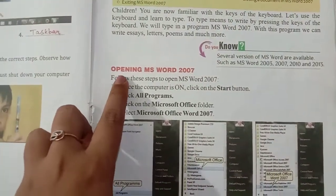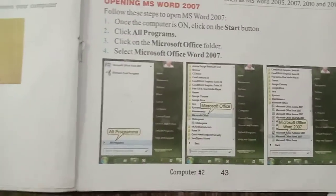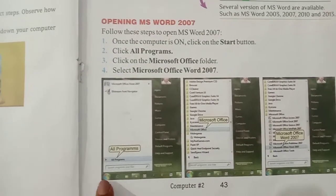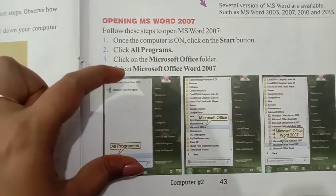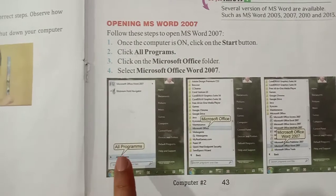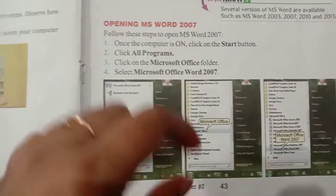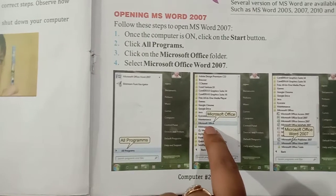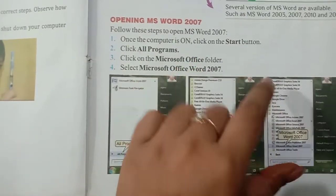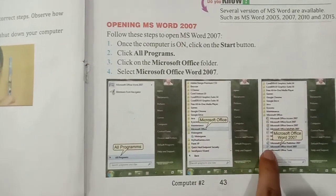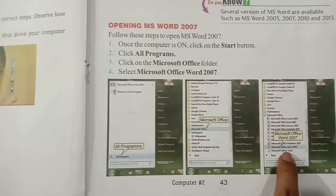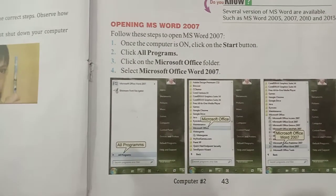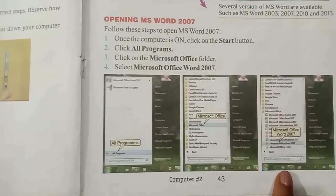The first topic is Opening MS Word 2007. It's very easy — just like we studied the Paint program. First of all, we click on the Start button, and a menu opens showing All Programs. We click on All Programs, then again a submenu opens. You'll find Microsoft Office. When you click on Microsoft Office, you'll find a new submenu in which you'll find Microsoft Office Word 2007. We have to open it just like we opened Paint.